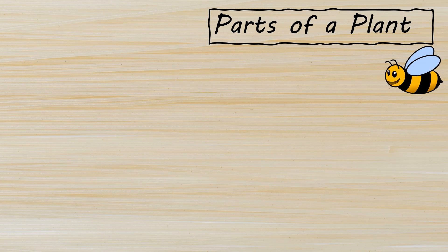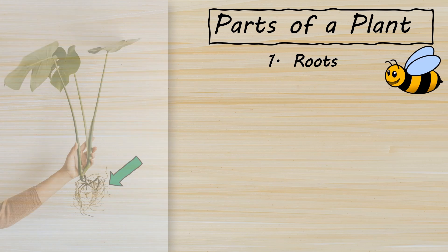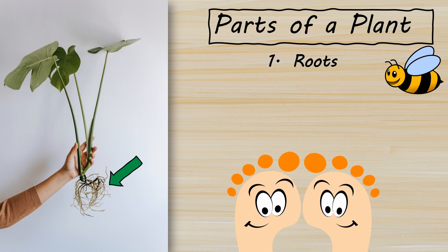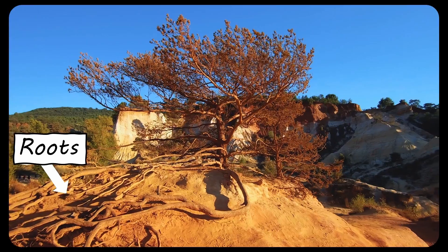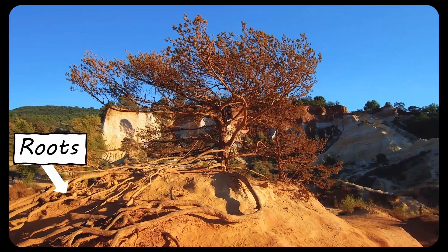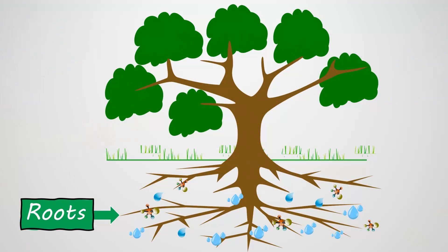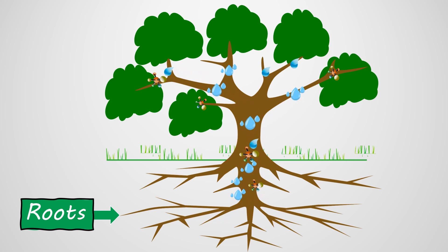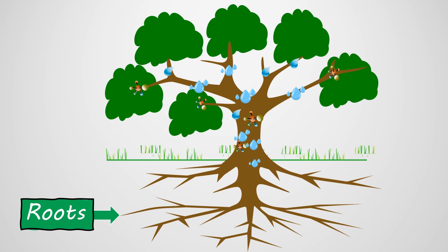One of the main parts of a plant are roots. These are like the plant's feet. They're usually hidden underground, and they hold the plant in place. Some plants, however, have their roots above ground. Roots also do a super important job of drinking water and taking in nutrients from the soil. Nutrients are like special food for trees and other living things. Together, water and nutrients help the plant grow big and strong.